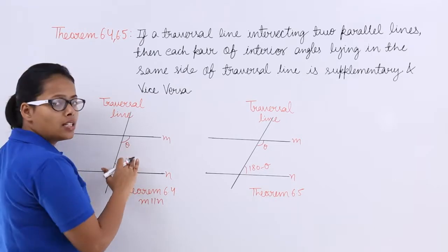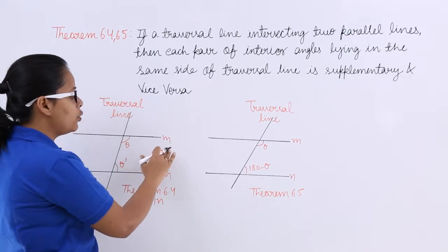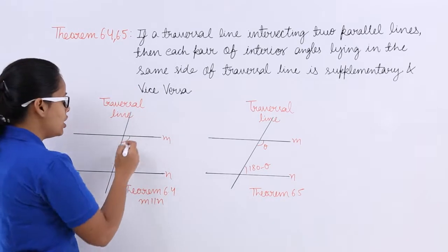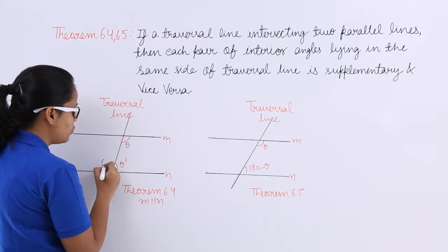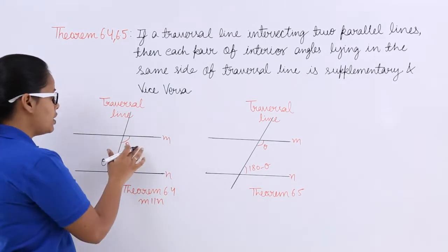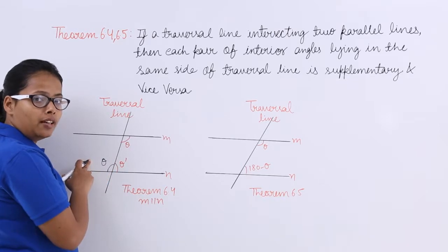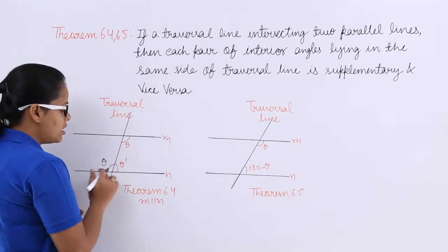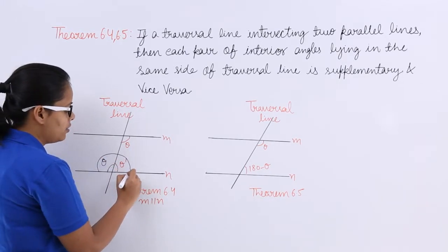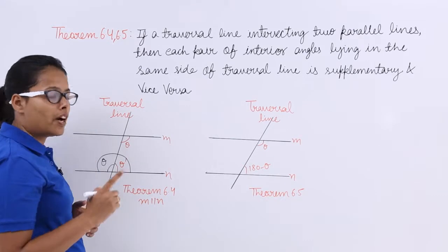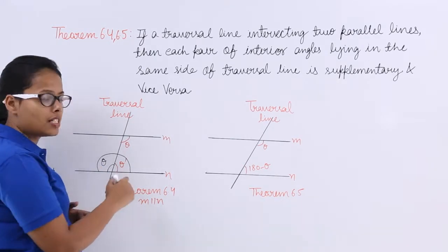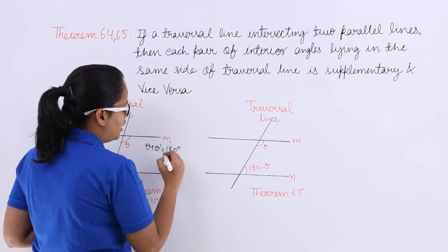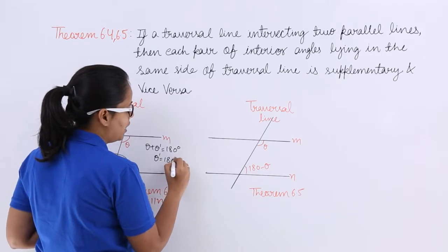To prove this, you know that when two lines are parallel to each other and this is a transversal line, their alternate interior angles will be equal. If this angle is theta, then this will also be theta. Now you need to calculate the value for theta dash. As this is a straight angle and the value of a straight angle is 180 degrees, the sum of theta plus theta dash is equal to 180 degrees. So the value for theta dash will be 180 degrees minus theta.